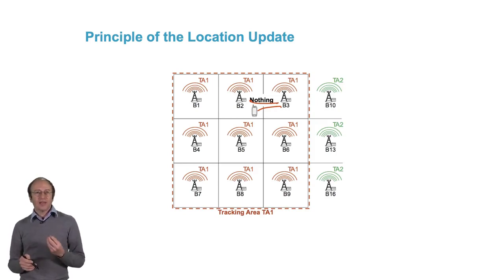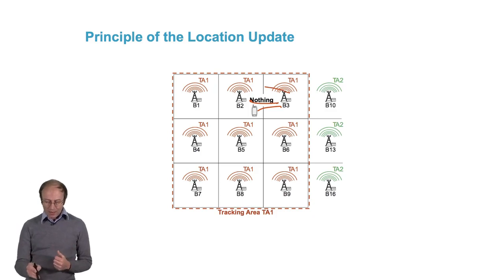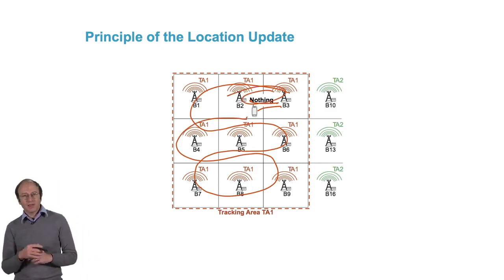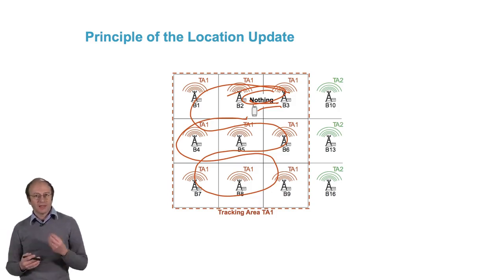Now, it can go anywhere in the tracking area. It's always the same. Nothing happens. As long as the cell phone does not cross the boundary of the tracking area, it does not update its location.